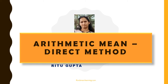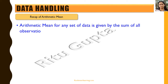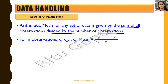Hello friends, in today's session we will be talking about the direct method for calculating arithmetic mean. Let's first take a recap of arithmetic mean. We know that for any set of data, the arithmetic mean is given by the sum of all the observations divided by the number of observations. So if we have n observations x1, x2, x3 till xn, then the mean would be x1 plus x2 plus x3 till xn divided by n.